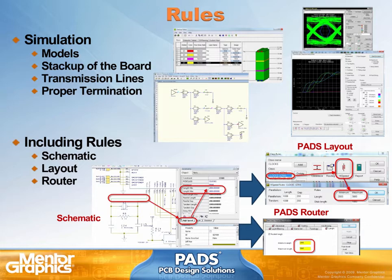Once you determine the rules for this particular signal or topology, you can include that information into your schematic. From the schematic, the information will flow into layout and you don't need to reset those rules. Then the router will also use the same rules that came from schematic to layout into router to route those critical nets. The whole point of being able to simulate upfront, then include them right from the schematic and flow the same information down the design path, is to eliminate the possibility of human error — because typing four or five, it's very easy to accidentally type a different number.